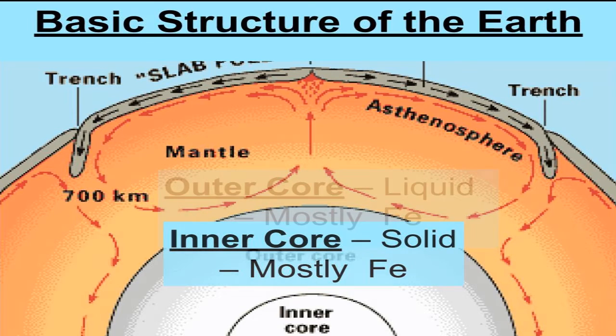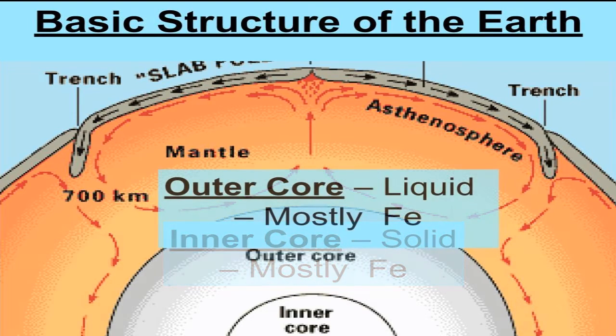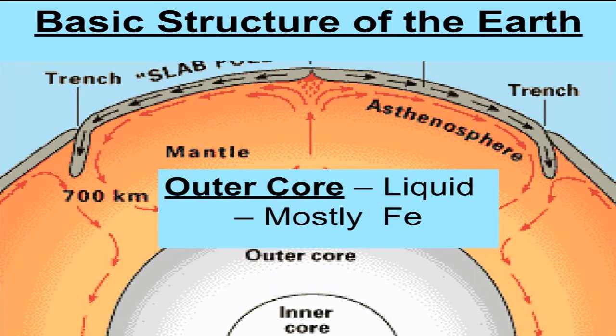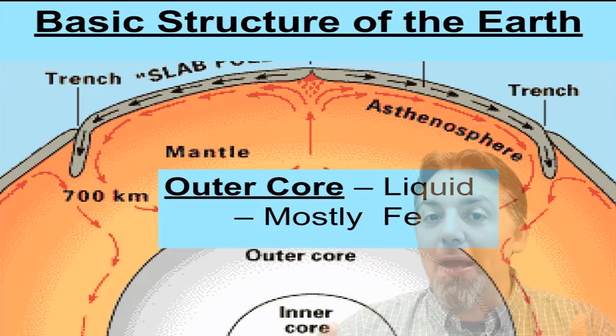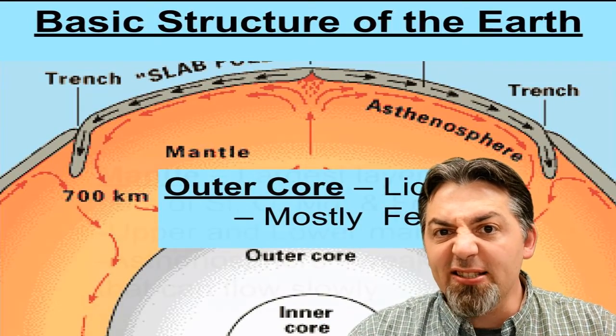And as we travel further out, then we get to the liquid outer core. So we had solid inner core and a liquid outer core. Now again, the liquid outer core is also thought to be made up of mostly iron, kind of an iron-nickel mix.